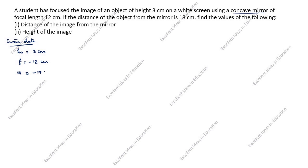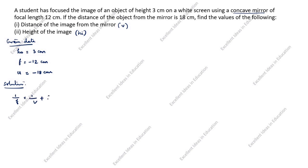What we need to find: the distance of the image from the mirror, which is v, and the height of the image, which is hi. Now the solution. The mirror formula is: 1 by f is equal to 1 by v plus 1 by u.